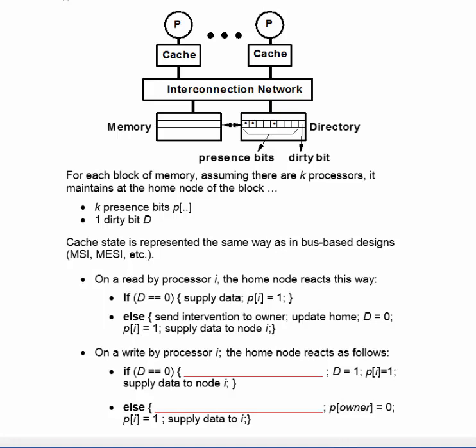Now let's consider a write transaction. I'm going to tell you some of the changes that take place, and the exercises will ask you to fill in the rest of the changes. If the dirty bit is zero, well then something needs to be done. The dirty bit is then set to one, and the presence bit for cache I is set to one, and data is supplied to node I.